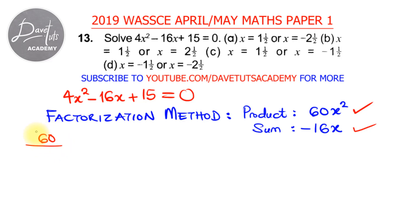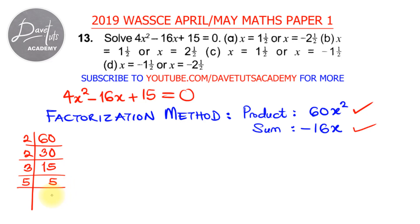We can do a division of 60: 2 goes into 60 to give 30, 2 goes into 30 to give 15, 3 divides 15 to give 5, and 5 divides 5 to give 1. Now let's look at the juxtaposition of these terms and find a combination that multiplies to give 60x squared and adds to give minus 16x.